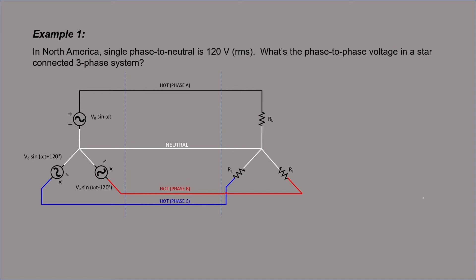We'll start off with North America. In North America, the voltage between a single phase and neutral is 120 volts RMS. What's the phase-to-phase voltage in a star-connected three-phase system? I've changed colors here because in North America, normally hot is black wire, white is neutral, and then if you have a three-phase system, the other two phases are typically either red or blue.